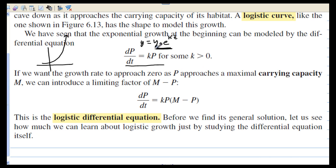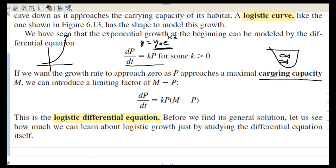Exponential growth isn't really realistic when dealing with nature. If we want the growth rate to approach zero as P approaches a maximal carrying capacity — in other words, when you have a bowl full of fish — once you reach, say, 20 fish, they're not going to grow anymore. The population is going to be stagnant because there's just not enough room. Fish are going to start dying out. So there's a carrying capacity for a fish bowl, for a forest, for a lake, for any kind of habitat.